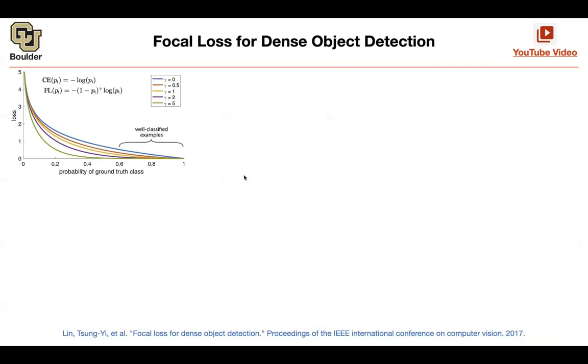One of the major problems when it comes to object detection is the class imbalance. You have a lot of boxes that are true negatives. You shouldn't detect them.